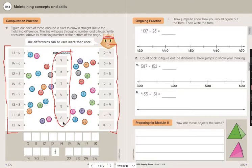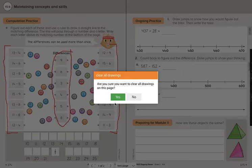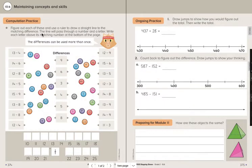The line will pass through a number and a letter. Write each letter above its matching number at the bottom of the page.